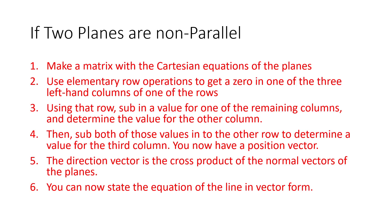Then, using that row, sub in a value for one of the remaining columns and determine the value for the other column. It's possible when you do this work that you get two zeros in that final row. If that happens, you can still work your way out of it by solving for that one remaining value and then bringing that value up to the top row and subbing in for one of the values there. In the fourth step, sub both those values into the other row to determine a value for the third column. That gives you a position vector, and the direction vector will be the cross product of the normal vectors of the planes, and you can state the equation of the line in vector form.